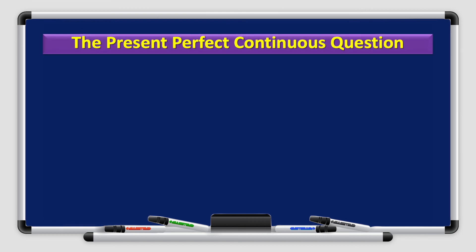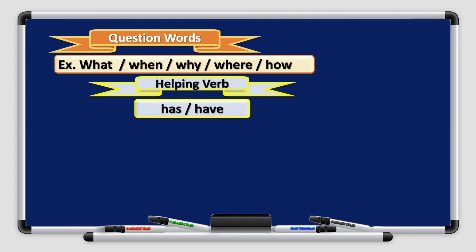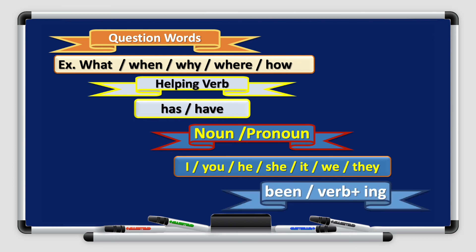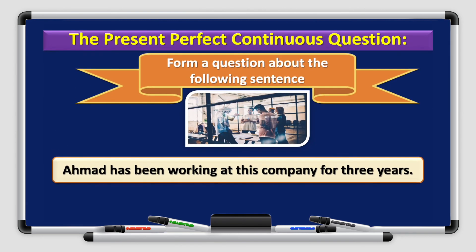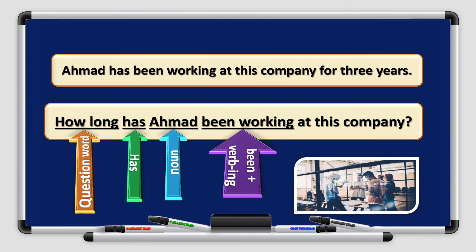What if we want to form a question? We start with the question word, what, when, why, where, or how. Helping verb has and have. Nouns and pronouns, I, you, he, she, it, we, they. And finally, been, verb ing. Let's form a question on the following sentence. Ahmed has been working at this company for three years. How can I form a question? How long, that's my question word, has Ahmed been working at this company? Has, followed by the noun Ahmed, been, remember it's important to include it, plus verb ing.